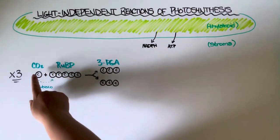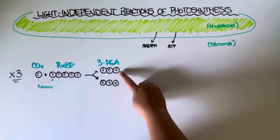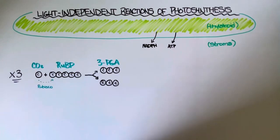When those two bond together it does make a six carbon compound, however that's not glucose. That six carbon compound is extremely unstable and so it breaks down immediately to form two three carbon compounds which are called 3PGA.